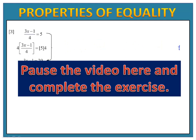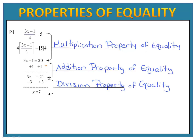Our third example is for you to try. In this exercise, we begin by multiplying both sides of the equation by four — that's the multiplication property of equality. Then we added one to each side — the addition property of equality. Finally, we divided both sides by three — the division property of equality. We end up with x equals seven, which gives a true number sentence when substituted back.